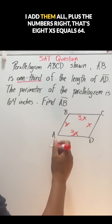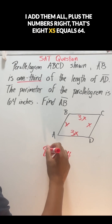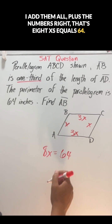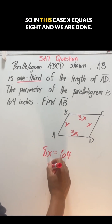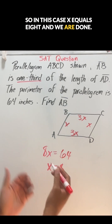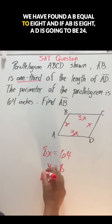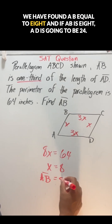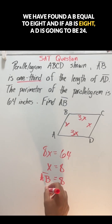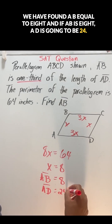Adding them all up, that's 8X equals 64. So X equals 8, and we are done. We have found AB equal to 8. And if AB is 8, AD is going to be 24.